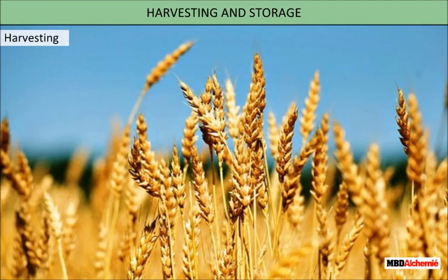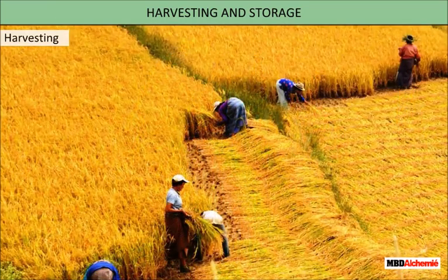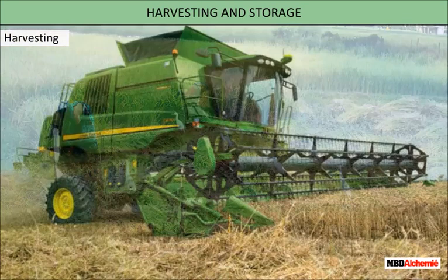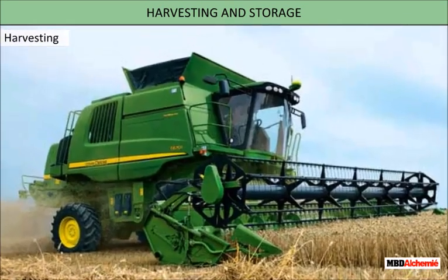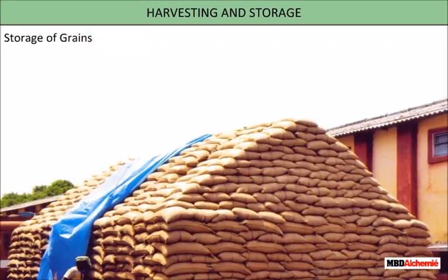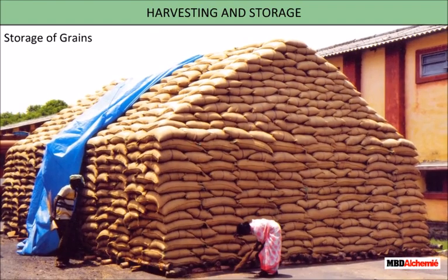Harvesting is the final stage of the agricultural task. Fully grown crops are cut and gathered. This is either done manually or by using a harvester combine.